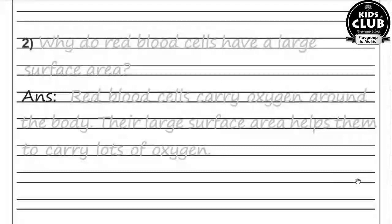Question number two: Why do red blood cells have a large surface area? Red blood cells carry oxygen around the body. Their large surface area helps them to carry lots of oxygen. Red blood cells ka surface area is liye bada hota hai kyunki unhein oxygen carry karni hoti hai.